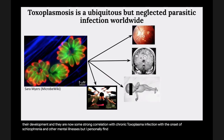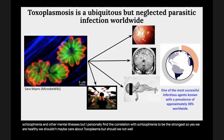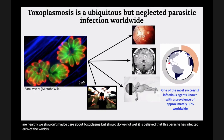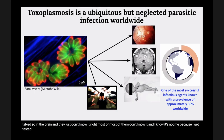There are now strong correlations between chronic Toxoplasma infection and the onset of schizophrenia and other mental illnesses — I personally find the correlation with schizophrenia the strongest. So yes, healthy people shouldn't worry too much, but it is believed that this parasite has infected 30% of the world's human population. If there are 100 people watching this, 30 of them have Toxo in their brain and don't know it. I know it's not me because I get tested in my lab.